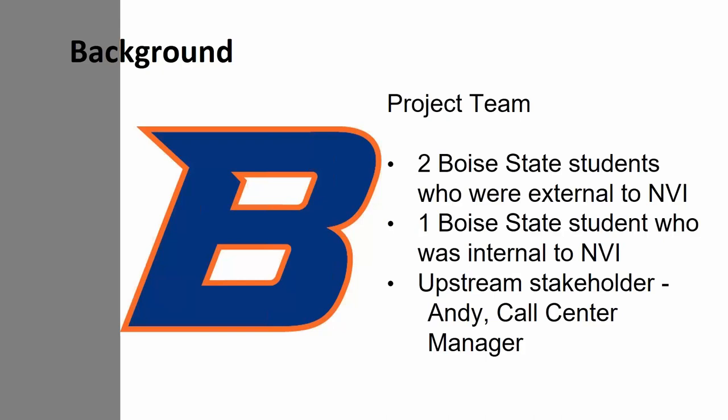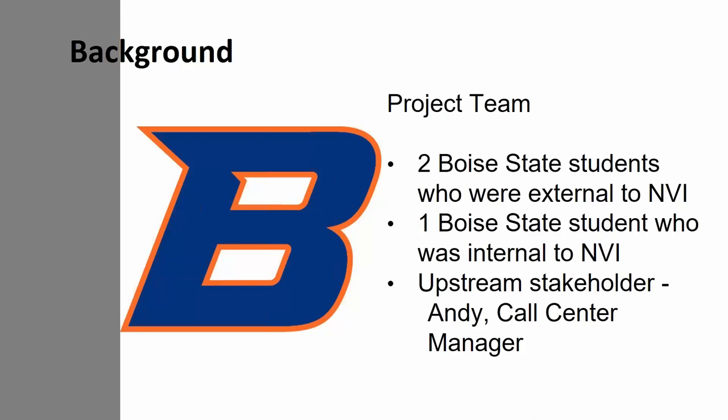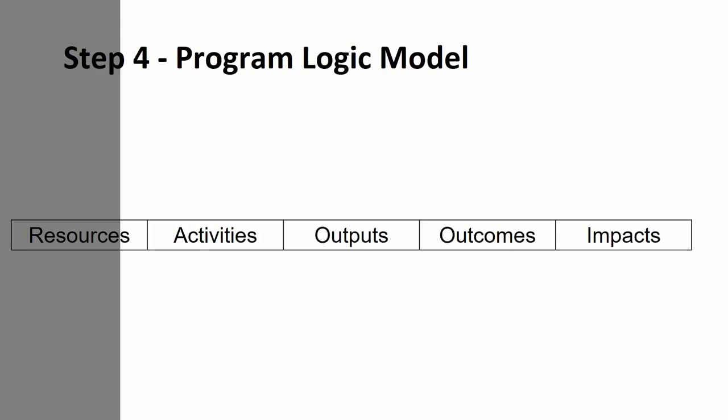Our main upstream stakeholder was Andy, a call center manager in charge of hiring. We did create a program logic model towards the beginning, focused on business outputs and outcomes. The trick was creating the right questions to ask Andy in order to fill in the PLM elements. We found that the way we asked these questions really helped us complete the PLM. So let me ask — is there a go-to question you use during analysis when meeting with sponsors or stakeholders to find out what the outcomes are? Please use chat to let us know.